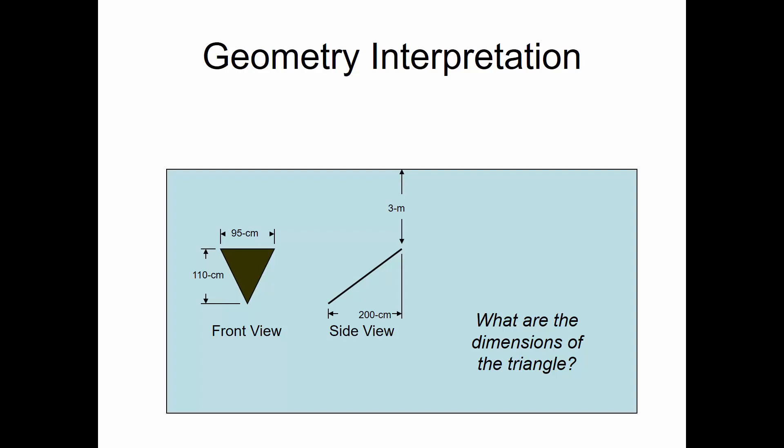So we compute 110 centimeters squared plus 200 centimeters squared and take the square root. Let me just check my calculations. If you'll double-check me, I'd appreciate the second verification: 110 squared plus 200 squared, take the square root — 228.25 centimeters.